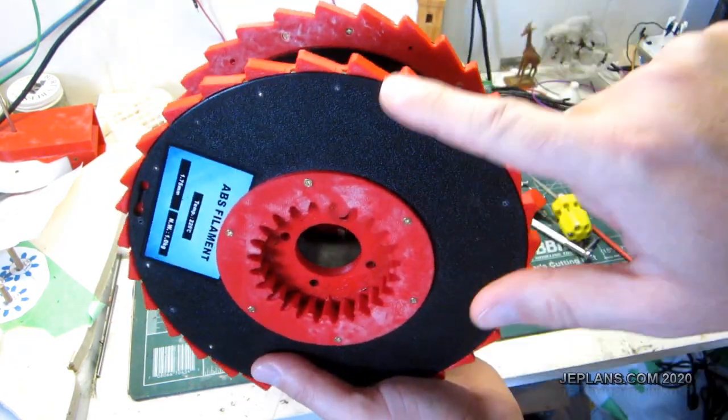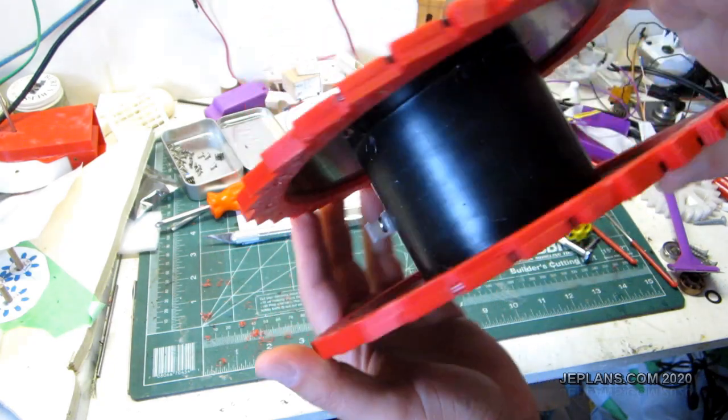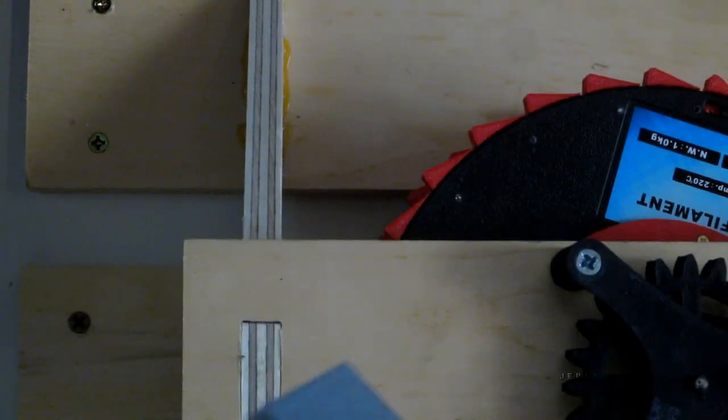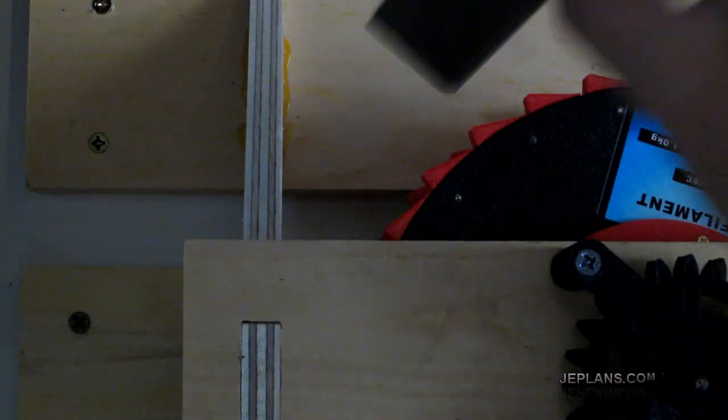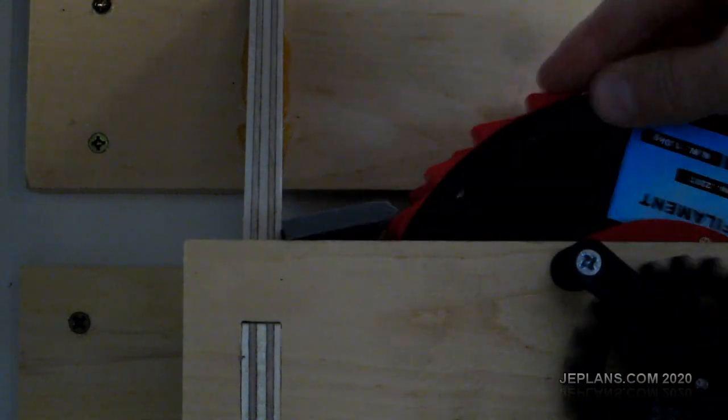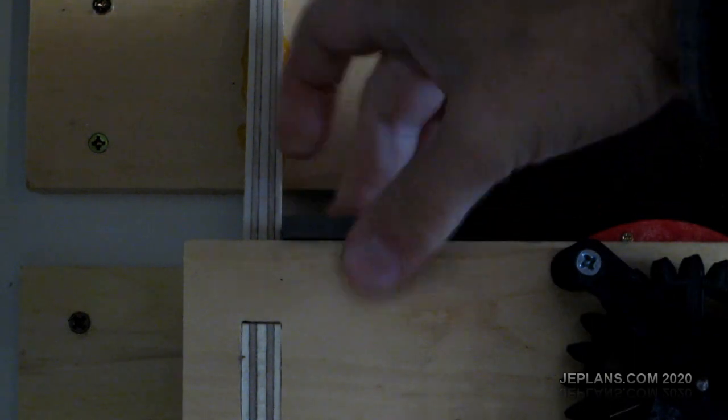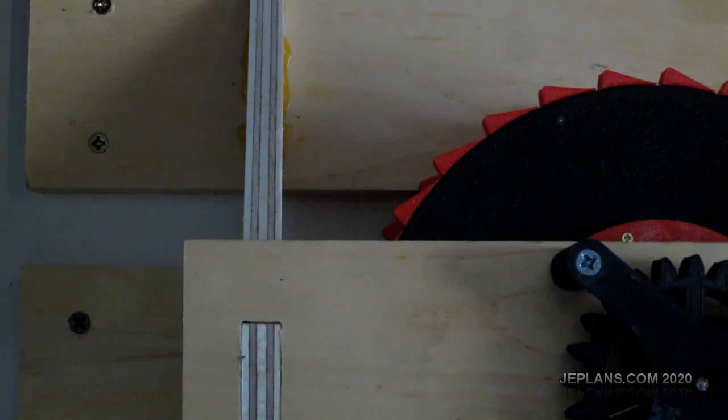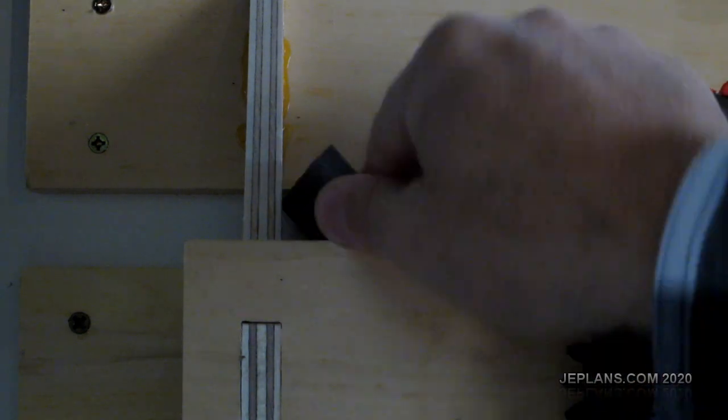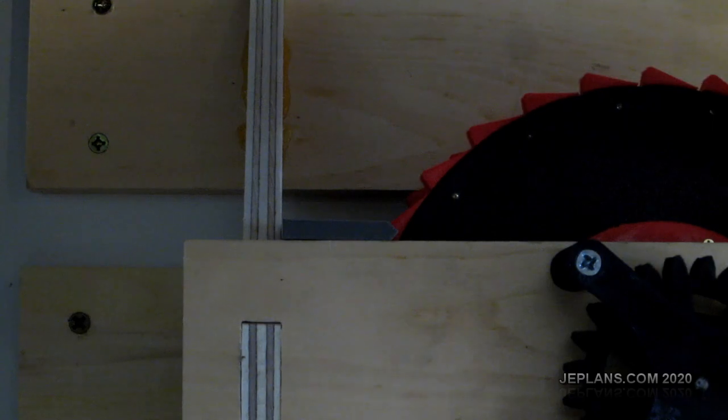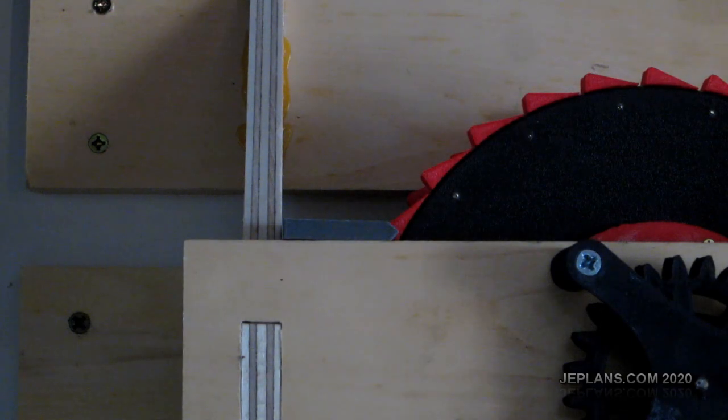Okay, here we have it with the teeth attached for the ratcheting function, so that when it catches it's using the outer rim to hold things in place. Here's the ratchet action. Basically I just have a piece that fits in here. It would work either way but it's designed to fit the teeth perfectly.